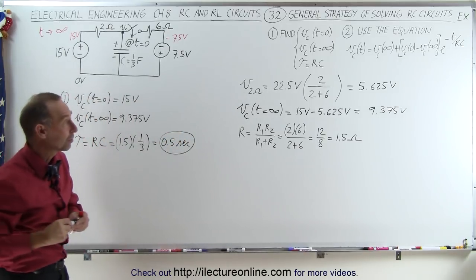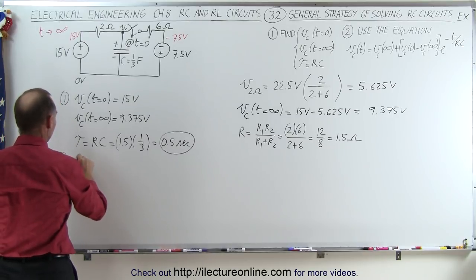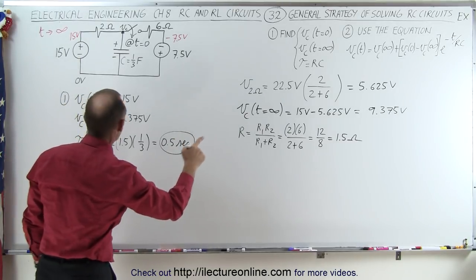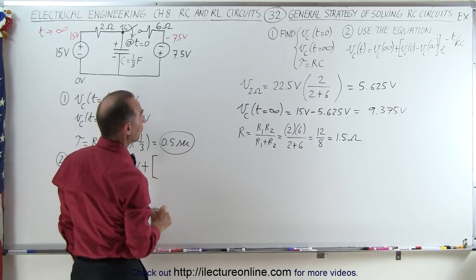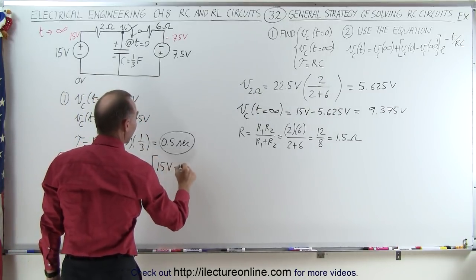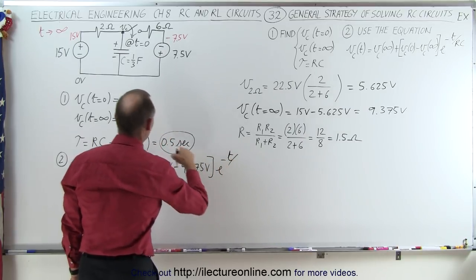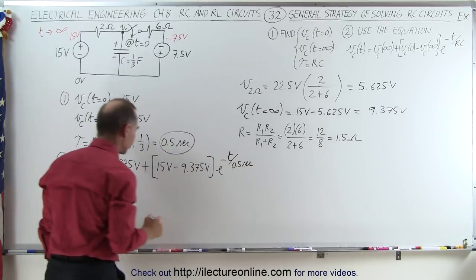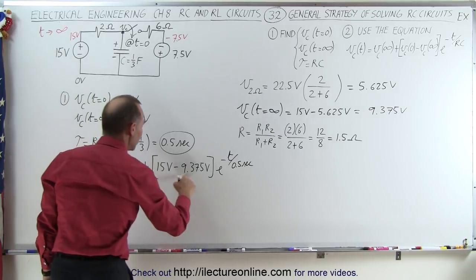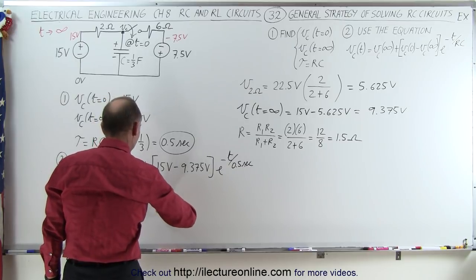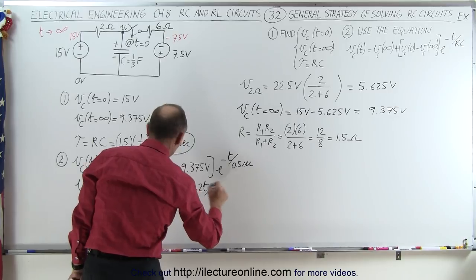The time constant is 1.5 ohms multiplied times one-third farad, so one-third of 1.5 is 0.5 seconds. Now we use the equation: the voltage across the capacitor as a function of time equals the voltage at infinity, 9.375 volts, plus the difference of 15 volts minus 9.375 volts, multiplied times e to the minus t over tau. Tau is 0.5 seconds, so that gives us 9.375 plus 5.625 times e to the minus 2t.